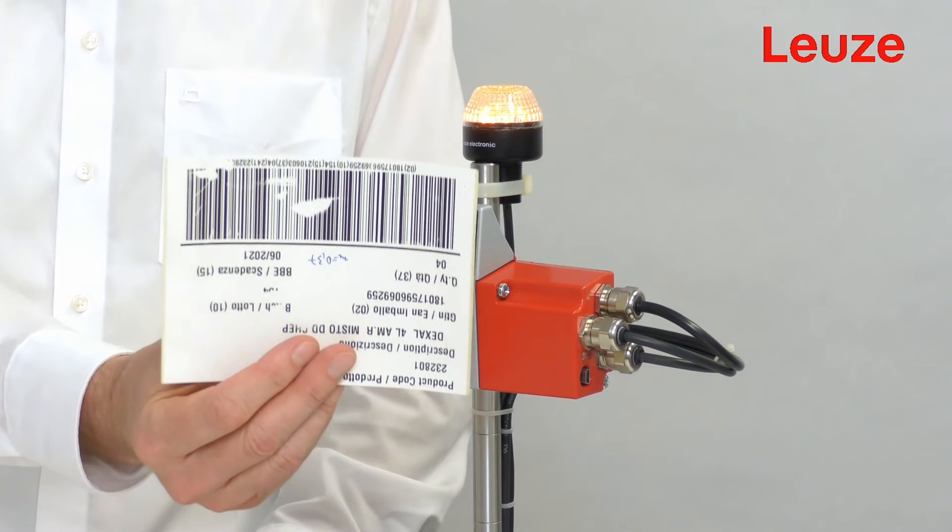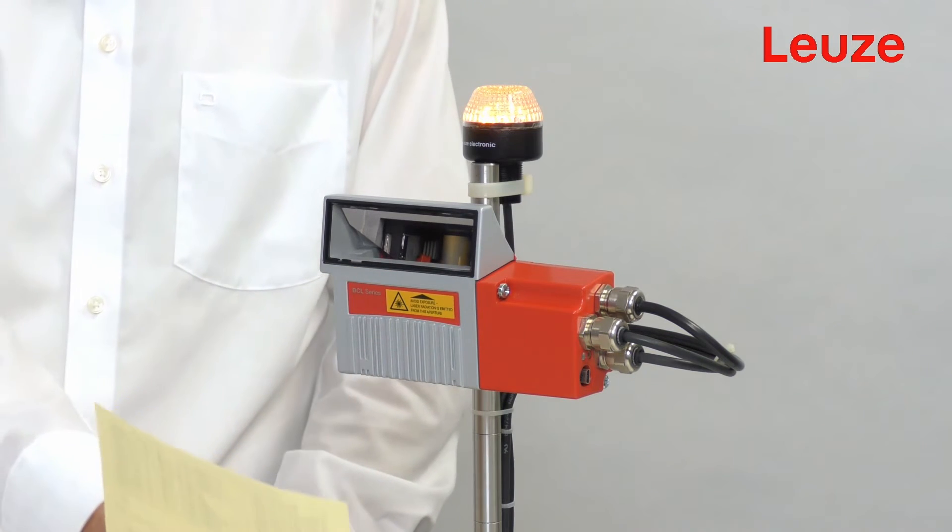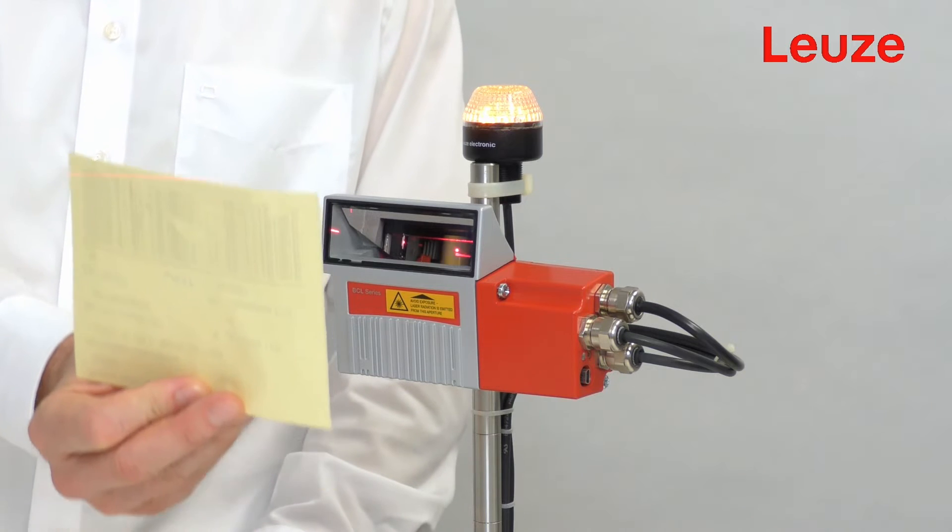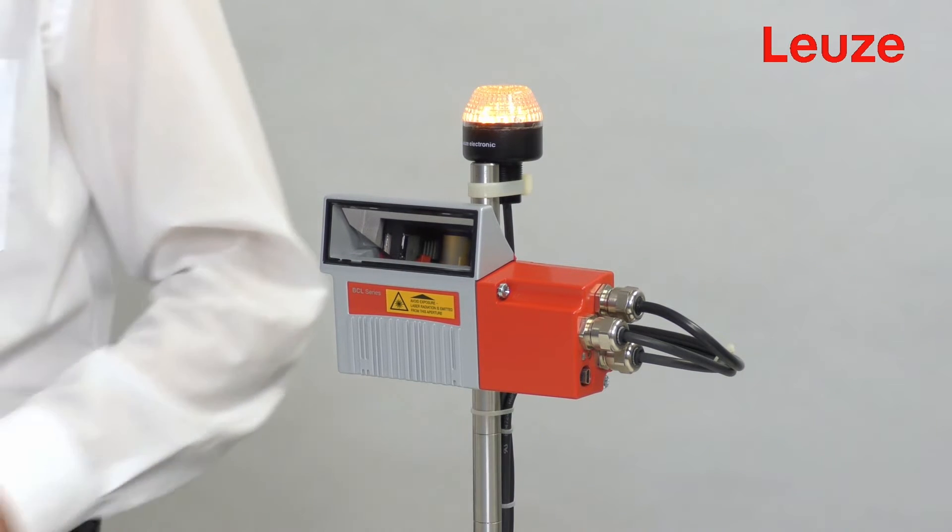We have a damaged code here. Normally, such a code leads to a no-read. We pass the label with the code through the reading field. And as we can see, the code was successfully read by our BCL300i despite the damage. This is how our code fragmentation technique works.